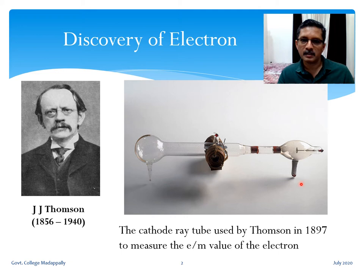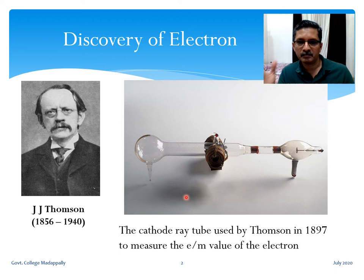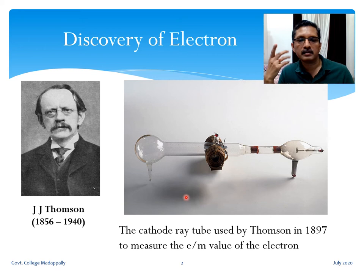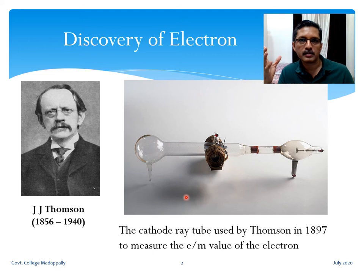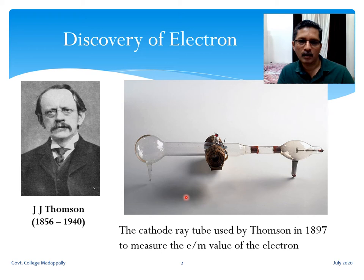This type of glass tube was used in physics starting from the 1850s. Henrik Geissler was the first person who designed them. Electrodes are fitted at both ends, sealed into the glass tube, so that we can apply voltage in the tube. The glass tube is connected to a gas pump to remove gas, reducing the pressure inside. In Geissler tubes, the typical pressure was nearly one-thousandth of one atmospheric pressure.